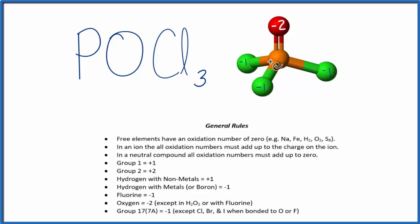So we're left with the phosphorus in the center, and we don't have a rule to help us with that, except that in a neutral compound, all of the oxidation numbers add up to zero. So when I add all these numbers up, including the phosphorus, it's going to equal zero.